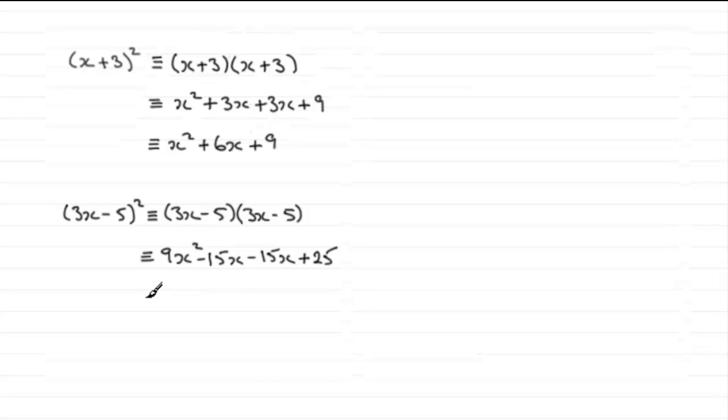And what this results in is 9x squared, the square of the first term. And then we get twice the minus 15x, the result of doubling this product here. 3x times minus 5. That gives us minus 30x. And then we've got 25, which is the square of minus 5. Plus 25 then.